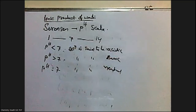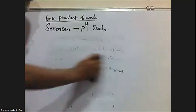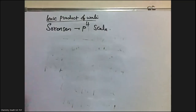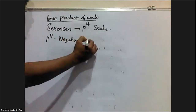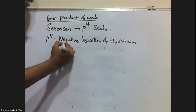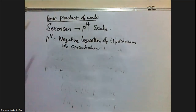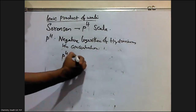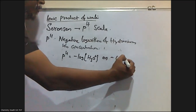Now we have to see how to calculate the pH of a solution. pH is the negative logarithm of hydronium ion concentration. Mathematically, pH = −log[H₃O⁺].